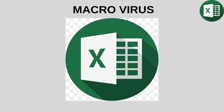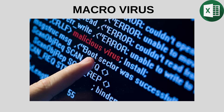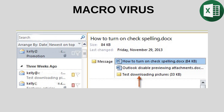Macro viruses are malicious code that runs in document-based software, especially Microsoft Office programs. Small commands called macros, used in programs such as Word and Excel, are written to automate the document. However, viruses that abuse this feature come hidden inside the file. As soon as you open this document, the virus becomes active and can damage your computer. Macro viruses are often spread through email attachments and replicate quickly by copying themselves into other documents.